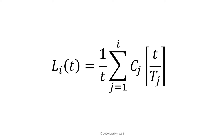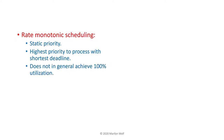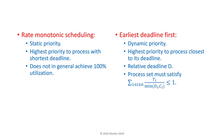Rate monotonic scheduling is a static priority algorithm that assigns the highest priority to the task with the shortest deadline. In general, this does not achieve 100% utilization, although there are certainly cases where rate monotonic can reach 100%. Liu and Leyland also studied earliest deadline first, a dynamic priority algorithm that assigns the highest priority to the task closest to its deadline — the relative deadline D. To be schedulable, the process set must satisfy the inequality that utilization is less than or equal to one. Earliest deadline first can achieve 100% utilization, but it requires dynamic calculation of the schedule.